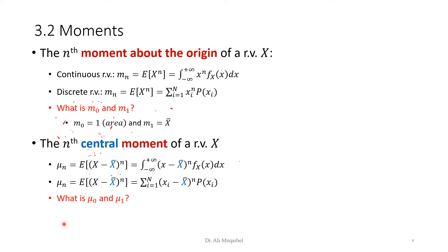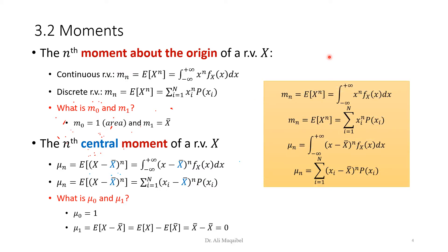What are mu0 and mu1? Substituting n=0 gives one — the area of the PDF. Substituting n=1 gives zero, so we are generally not interested in mu0 or mu1; we're interested in the second order central moment and above. To summarize, there are four equations — for non-central and central moments, each in discrete and continuous form.